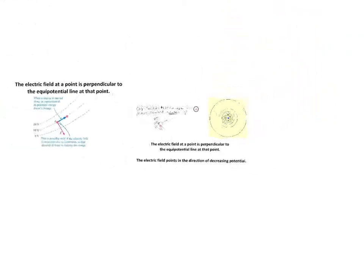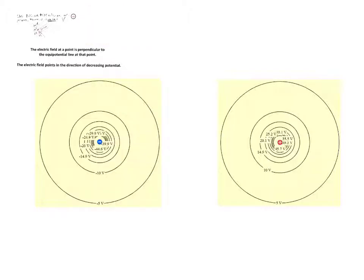Given these two pieces of information — that the electric field is always perpendicular to the equipotential lines, and that the electric field points in the direction of decreasing potential — we should always be able to qualitatively tell something about both the electric potential and the electric field given limited information. For example, even if we're given only the equipotentials, we can determine the direction of the electric field and the sign of the charge that sets up that field simply by looking at what direction the electric potential decreases. In whatever direction the electric potential decreases, that's the direction of our electric field. If the electric potential decreases toward a charge, that tells us it's a negative charge; if it decreases away from the charge, that tells us it's a positive charge. Given a system of two or more charges, we should be able to figure out the equipotential surfaces, the equipotential lines, and the electric field of that system.